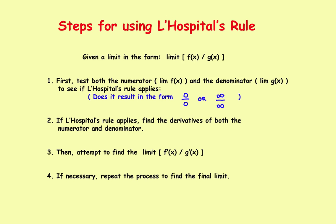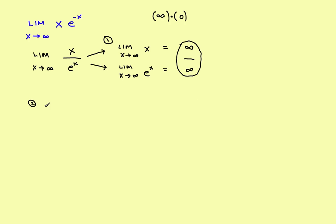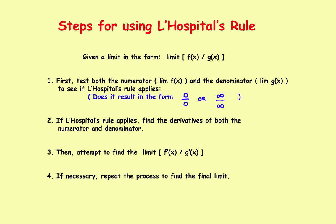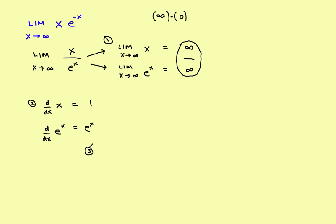Step two: find the derivatives. The derivative of x is 1. The derivative of eˣ is eˣ. Step three: find the limit as x approaches infinity of 1 over eˣ. You have a constant in the numerator, and as x goes to infinity eˣ becomes an increasingly large number, so 1 divided by a large number goes to zero. That is the solution to this last problem.